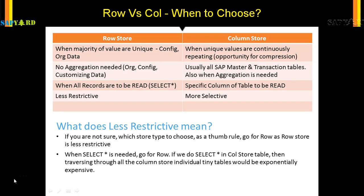So where do you find this? Say you have org data where you have company code 006, then another company code 009, and another company code 012. You will never add those company codes — even though they are numbers, what would you get if you add 009 and 012? It doesn't make sense. So when aggregation is not needed, just go for a row store.